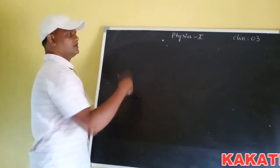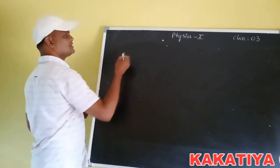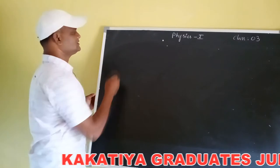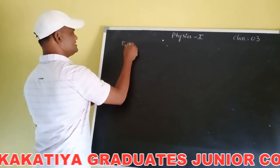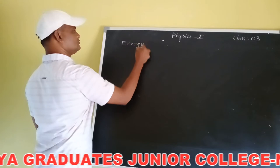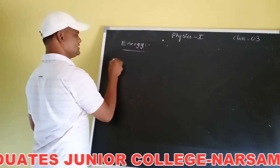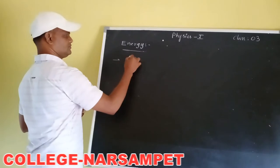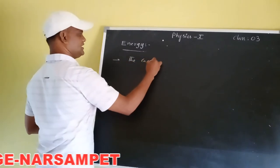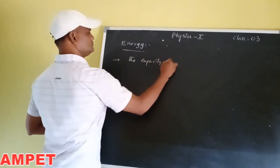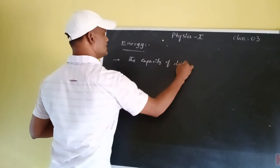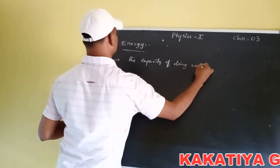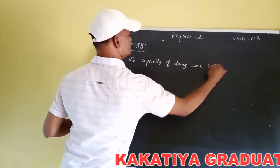Good morning first year students. In the previous class we were discussing about work and power. In the present class we are discussing about energy. Energy is nothing but the capacity of doing work. The capacity of doing work is known as energy.